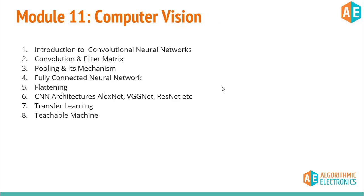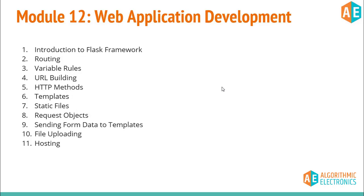The next module is Computer Vision — covering image classification and image recognition problems such as face recognition, fruit quality classification, object identification in real-time video. We will use Convolutional Neural Networks (CNNs), one of the most powerful algorithms for image classification. We will also discuss different CNN architectures, transfer learning, and a programming-free platform called Teachable Machine.